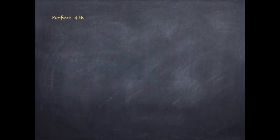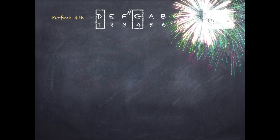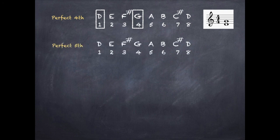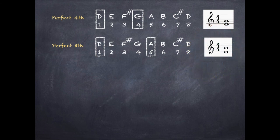A perfect fourth in the D major scale goes from D to the fourth note, G, and I stack them on the stave. A perfect fifth goes from D to the fifth note, A, and I stack them. You can see the process is directly translated regardless of the key.